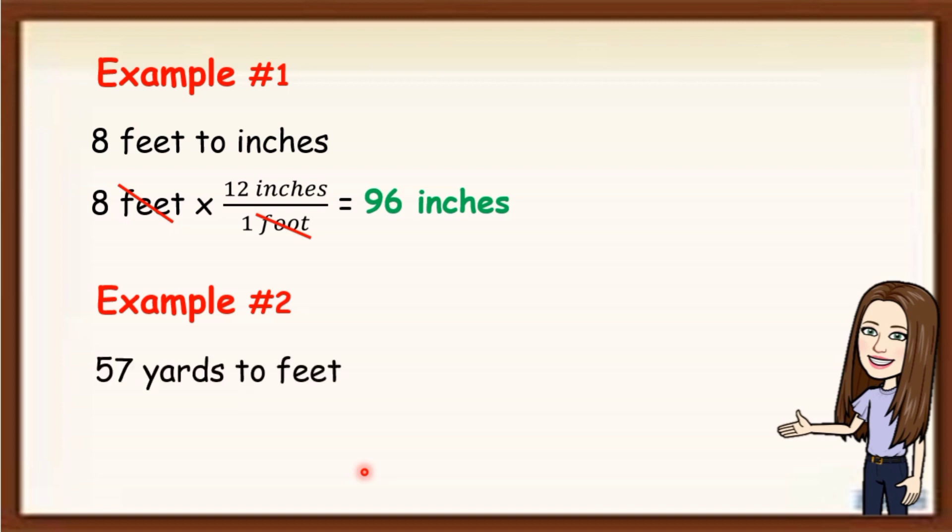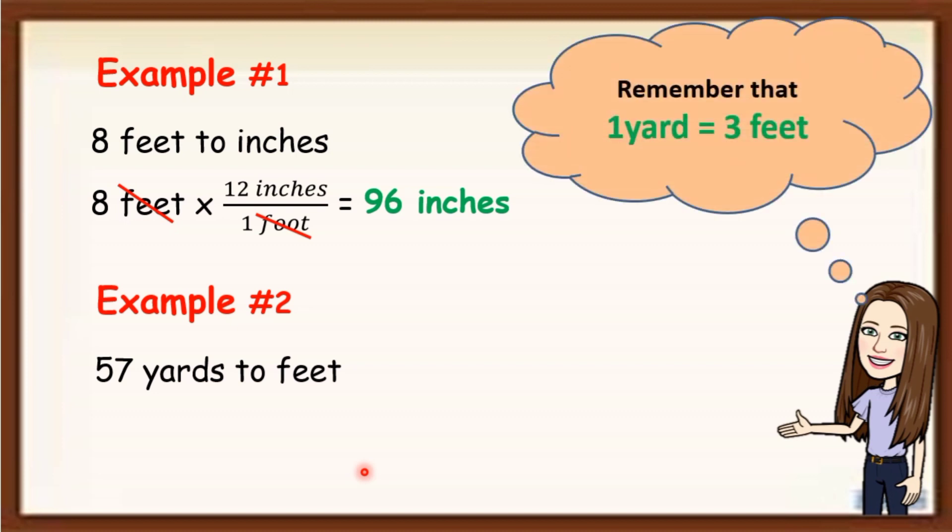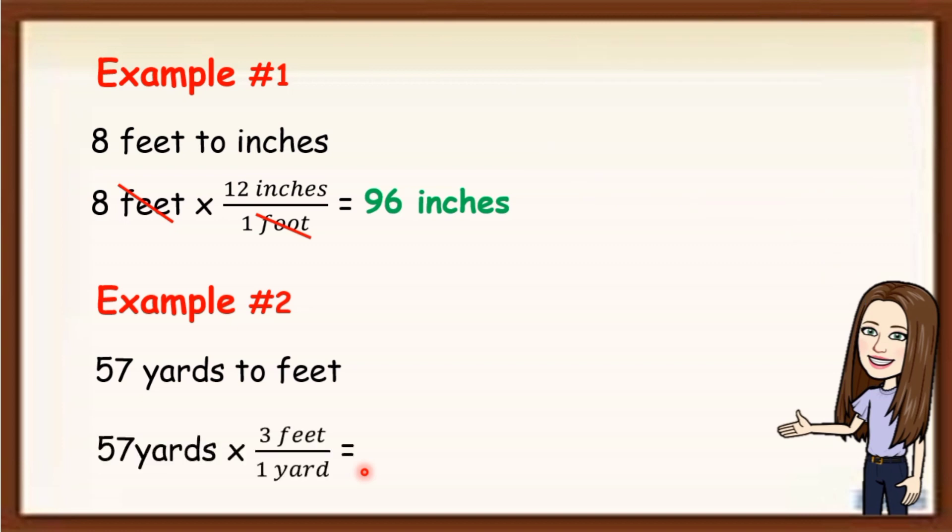57 yards to feet. Remember that 1 yard is equal to 3 feet. It will become 57 times 3 feet over 1 yard, because there is 3 feet in 1 yard. Now we are going to find out how many feet are there in 57 yards. Cancel the yard because we are looking for the feet.